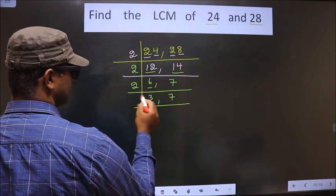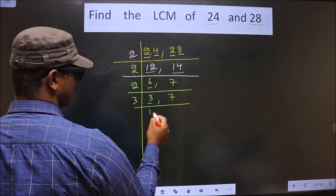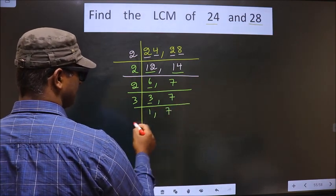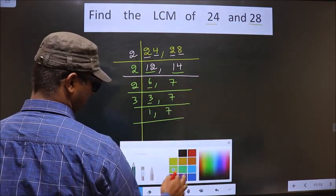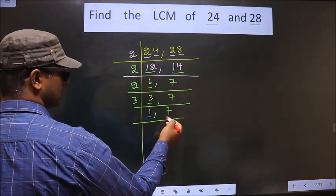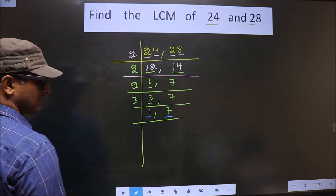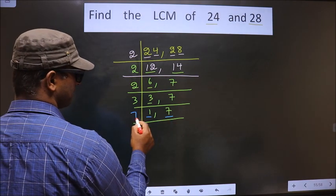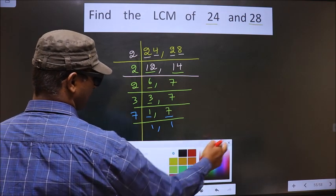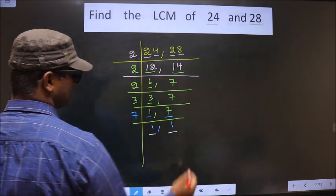Here we have 3. 3 is a prime number, so I take 3 and 1. 7 is not divisible by 3, so you write down 7 as it is. Now, here we got 1, so you focus on the next number, that is 7. 7 is a prime number, so you take 7 times 1 is 7. So now, we got 1 in both the places.